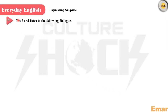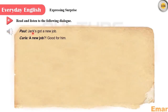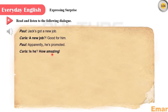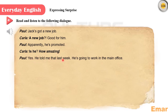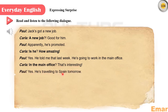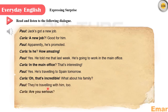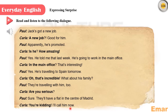Everyday English: expressing surprise. Read and listen to the following dialogue. 'Jack's got a new job.' 'A new job? Good for him.' 'Apparently he's promoted.' 'Is he? How amazing.' 'Yes, he told me that last week — he's going to work in the main office.' 'In the main office? That's interesting.' 'Yes, he's travelling to Spain tomorrow.' 'Oh, that's incredible. What about his family?' 'They're travelling with him too.' 'Are you serious?' 'Sure, they'll have a flat in the centre of Madrid.' 'You're kidding. I'll call him now.' Take a look at the phrases in bold — these expressions are used to express surprise, and we're going to use them in the coming exercise.